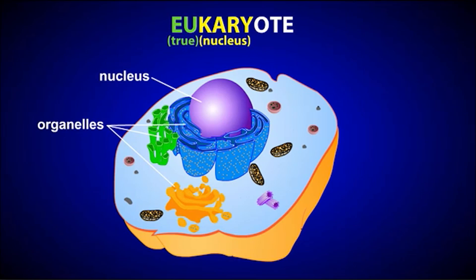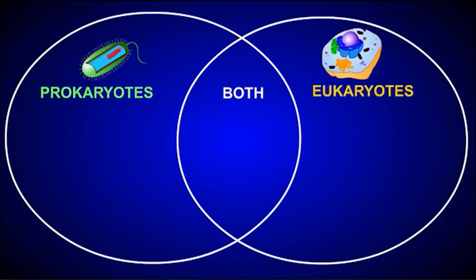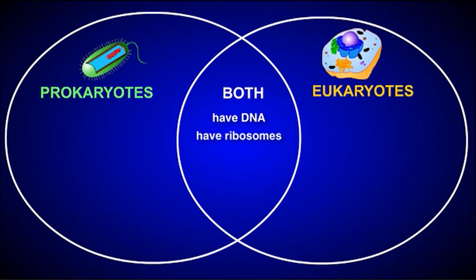Let's use a Venn diagram to compare prokaryotes and eukaryotes and see what they have in common. Both prokaryotes and eukaryotes share several features: they both have DNA as their genetic material, ribosomes, cytoplasm, and a plasma membrane.